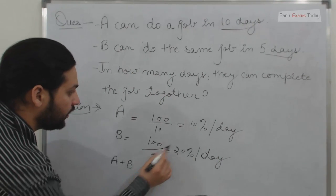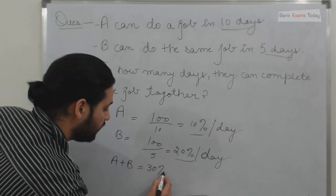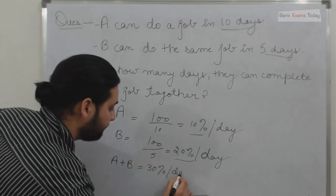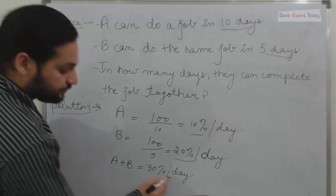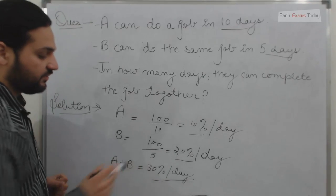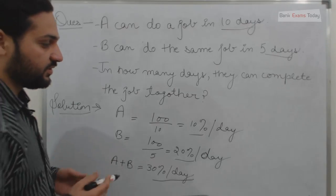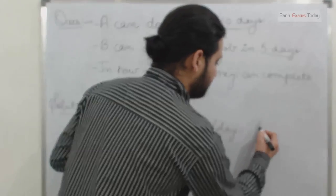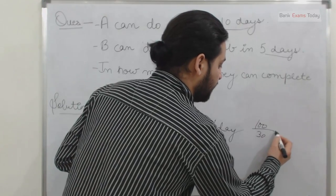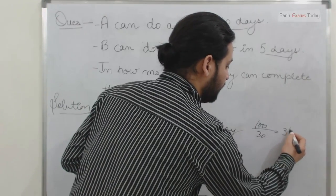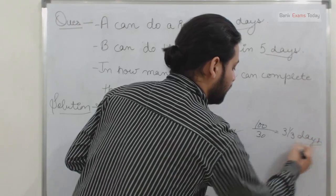The combined efficiency is 10 percent plus 20 percent, which equals 30 percent per day. So if A and B work together, they can complete 30 percent of the job in one day. To complete 100 percent of the job, it simply takes 100 divided by 30, which equals 3 and one-third days. That's the answer.